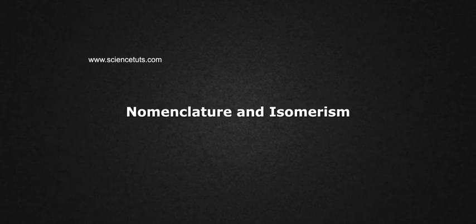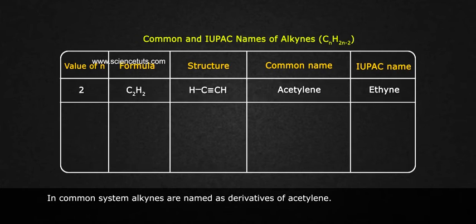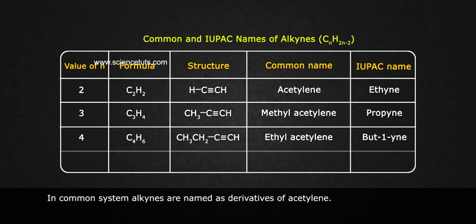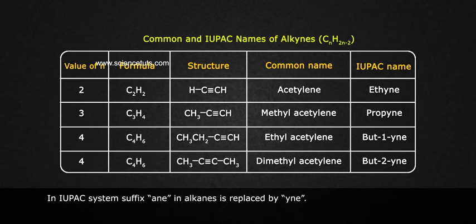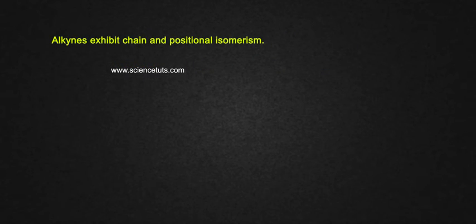Nomenclature and isomerism: In the common system, alkynes are named as derivatives of acetylene. In the IUPAC system, the suffix '-ane' is replaced by '-ine'. Consider the longest chain and give the least number to the carbon bearing the triple bond. Alkynes exhibit chain and positional isomerism.